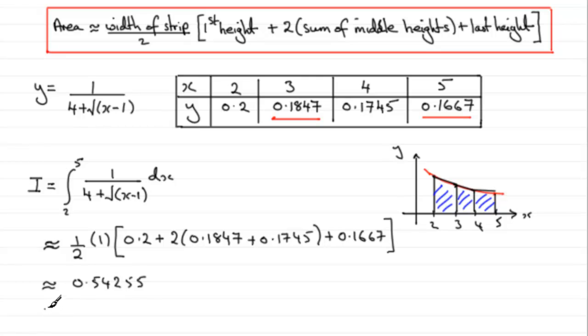But we need to give this to three decimal places, so this is going to be 0.543, to three decimal places, three DP.